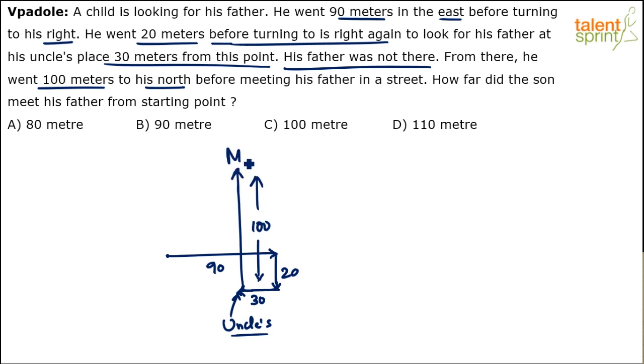Before meeting his father in his street. So he meets his father at this - this is the meeting point. So the question is how far did the son meet his father from the starting point? This was the starting point and here's the meeting point. So we've got to find out the distance between these two points. You see this dotted line, this is what we need to connect. Now if you see this is like a - let's say this is a point S.